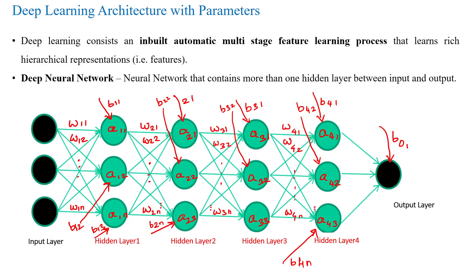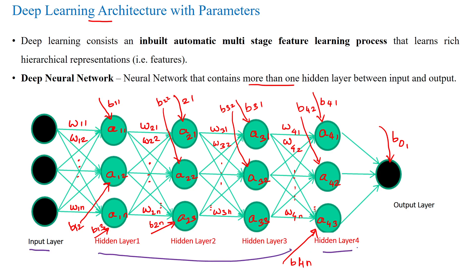Hello everyone. How to calculate the number of parameters available in a deep learning architecture. As per the procedure, the deep learning architecture will have more than one hidden layer between the input layer and output layers. Here the input layer is given, four hidden layers are given, and an output layer is there. The connection between the input layer and hidden layer has weight parameters and bias parameters.